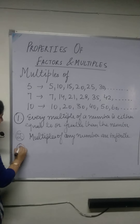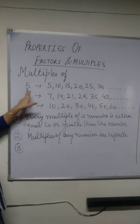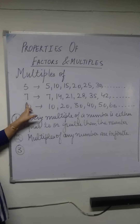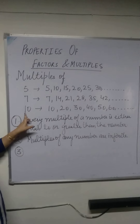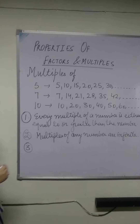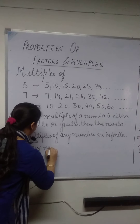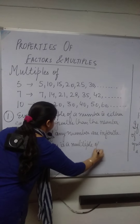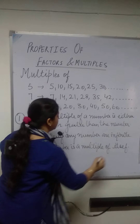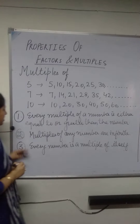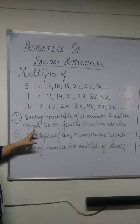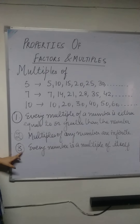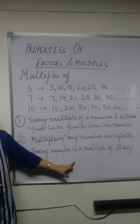The third and last property is, in each case, you can see that 5 is a multiple of itself, 7 is a multiple of 7, and 10 is a multiple of 10. So we can have one more important property: every number is a multiple of itself. So here we have done three properties of multiples — every multiple of a number is either equal to or greater than the number; multiples of any number are infinite; and every number is a multiple of itself.